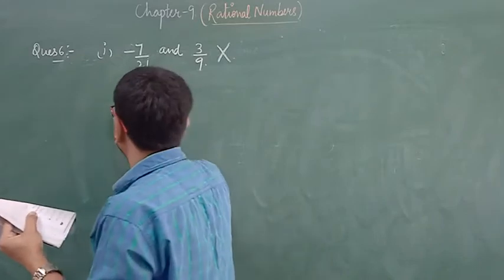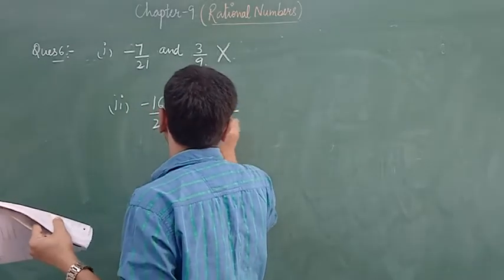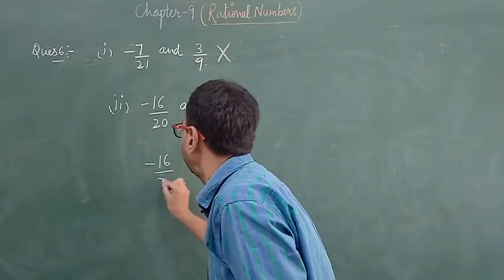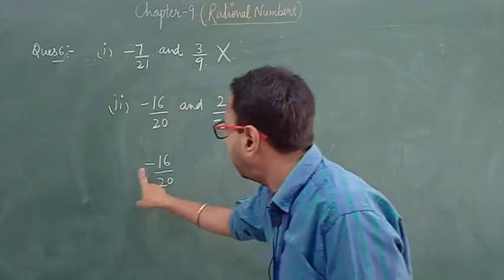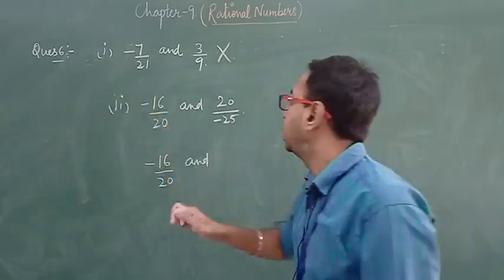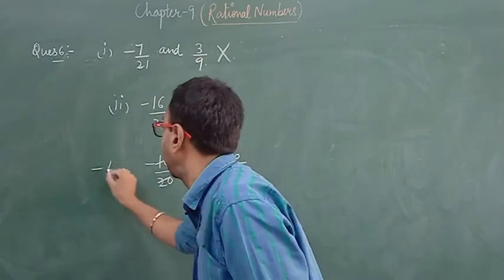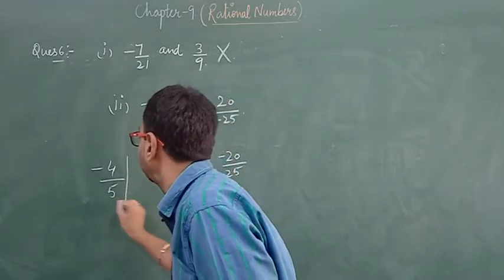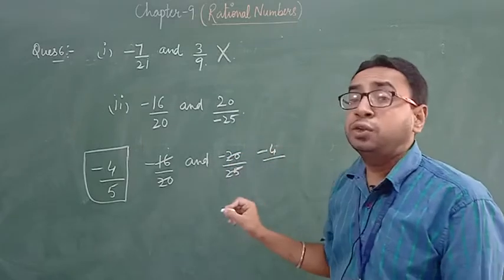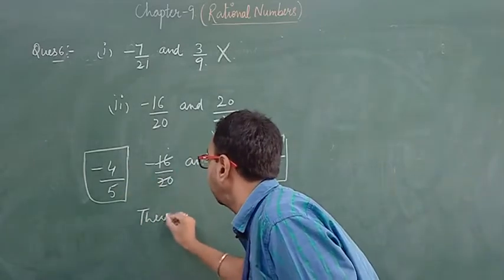Second part: minus 16 upon 20 and 20 upon minus 25. First, convert to standard form — bring the sign from the denominator to the numerator, giving minus 20 upon 25. Now reduce: HCF gives minus 4 by 5 for the first, and reducing minus 20 by 25 also gives minus 4 by 5. Hence, they are equivalent.